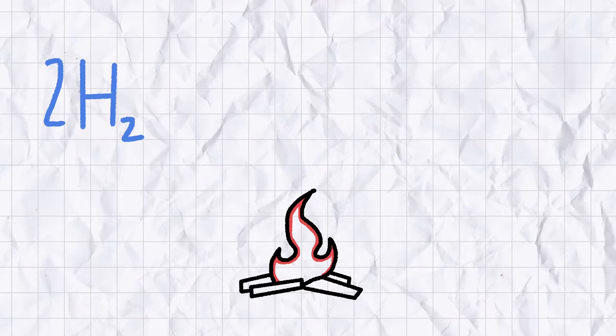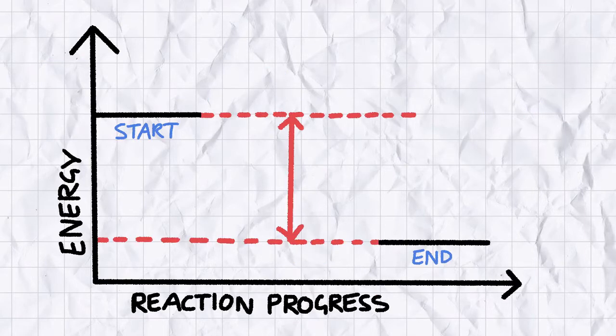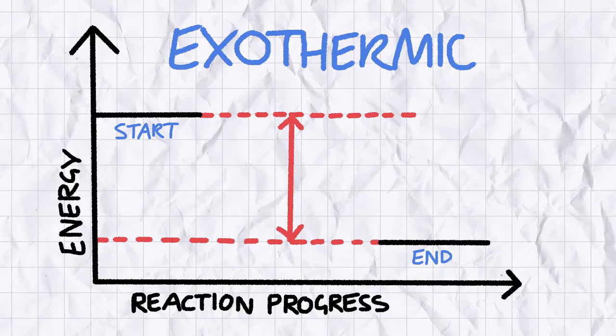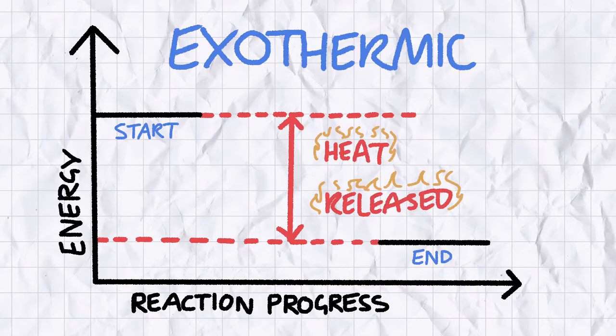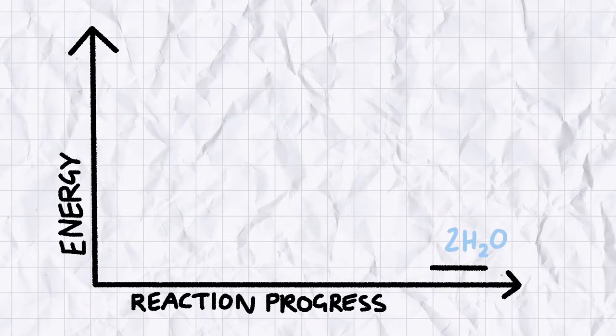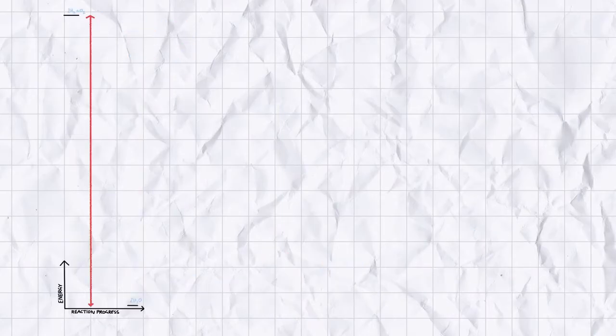If exposed to a source of heat, hydrogen gas will react with oxygen in the air to make water. As a general rule of thumb, the more stable a reaction's end product is, the more exothermic, or heat-releasing, you can expect that reaction to be. Now water is a very stable molecule, and this reaction is very, very exothermic.